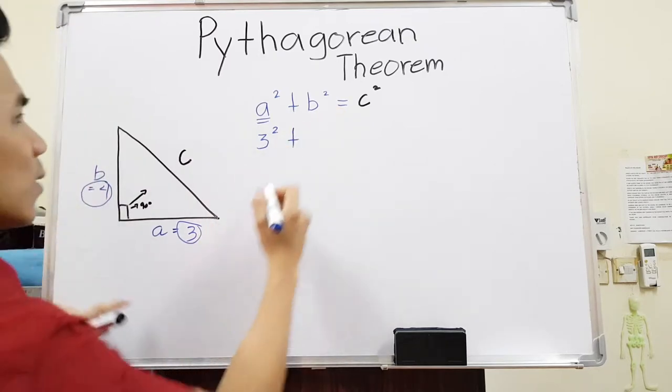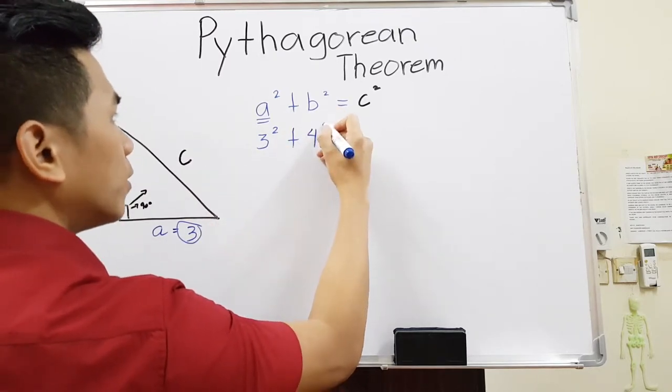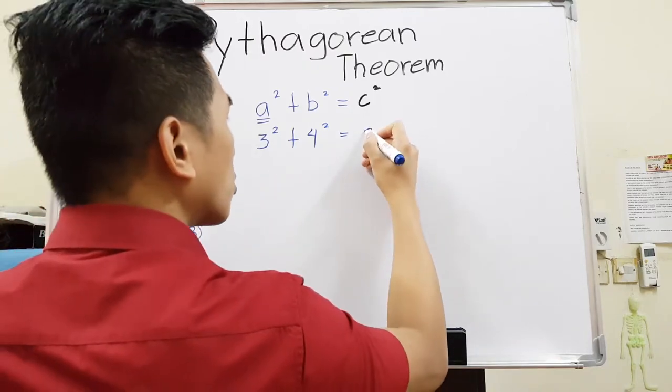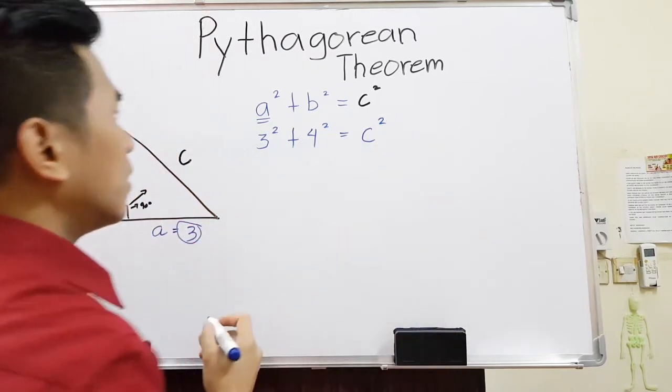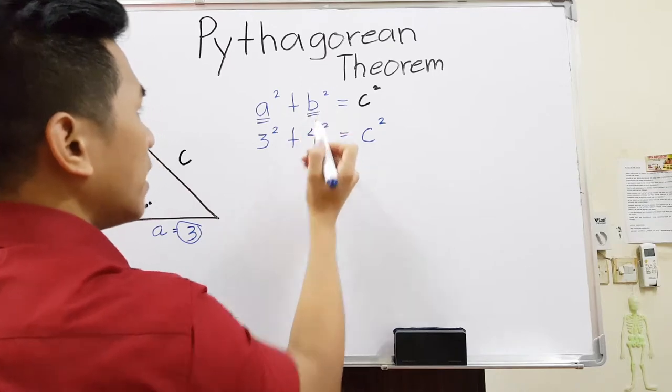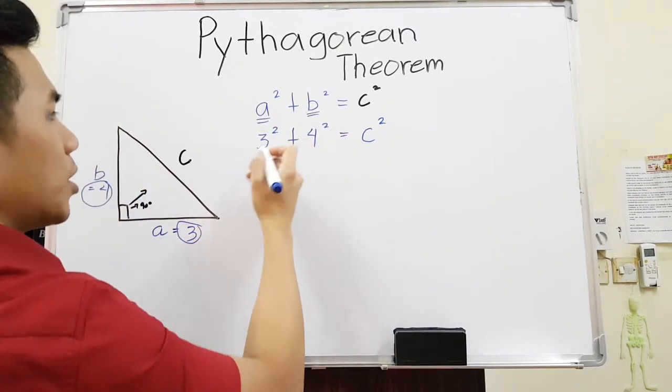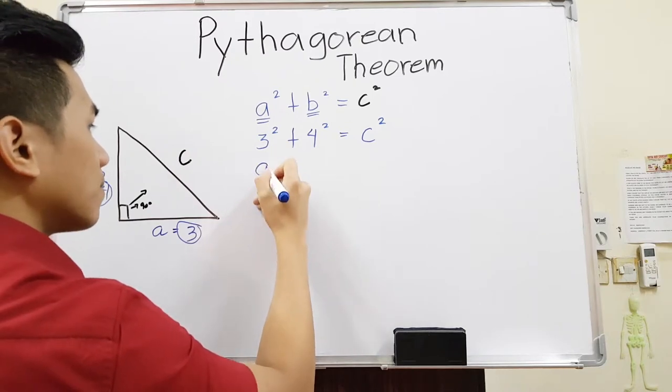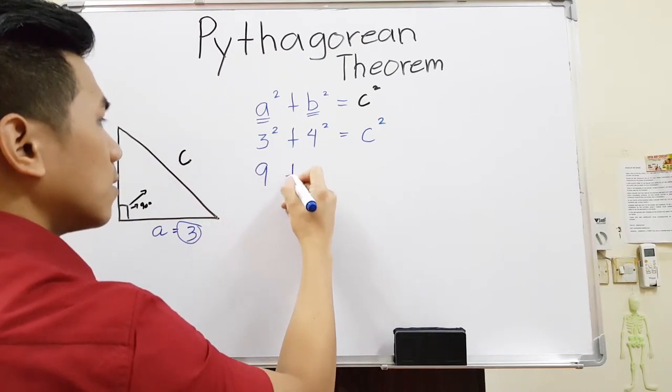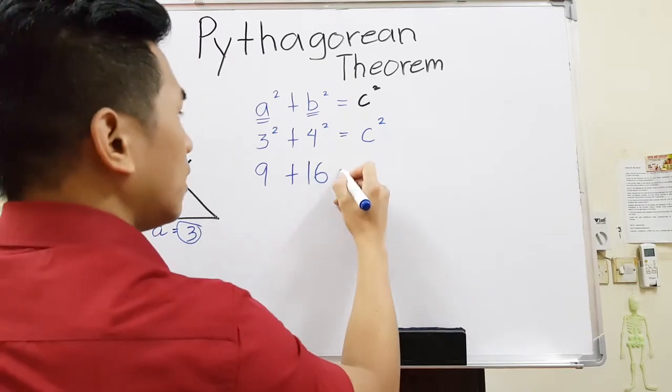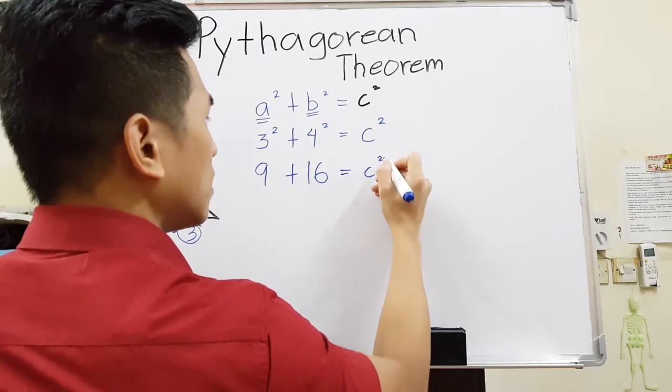What is our B? B is 4. So 4 squared equals, we don't know what our C is, so we'll do C squared. Literally replace A and B because those are the available numbers that we have. What is 3 squared? 3 squared is 3 times 3, which is 9, plus 4 squared, 16, equals C squared.